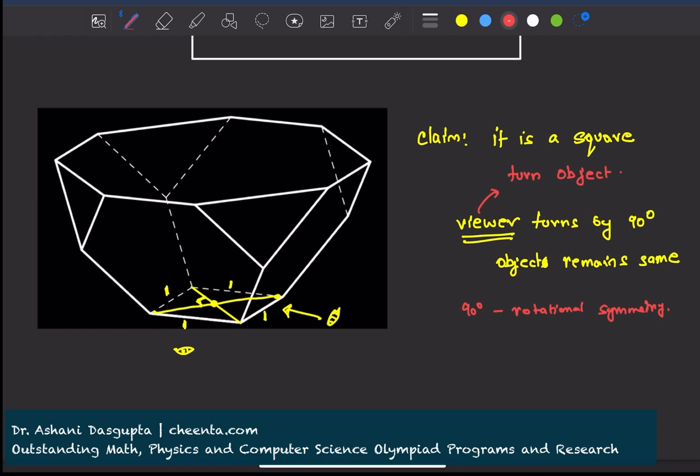Which essentially means that this quadrilateral is, after all, not a rhombus, not any rhombus. It's a square.